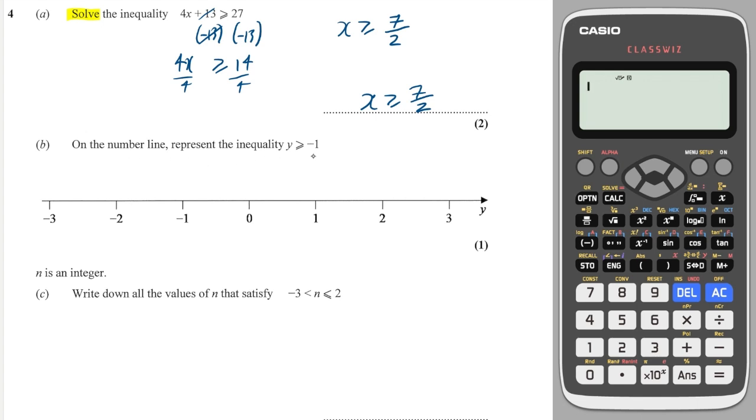We'll represent this on a number line. So the number which we have here is minus 1, so we draw a circle at minus 1. Because it's greater than or equal to, it means I have to fill this circle in. And because it's greater than, it means I'll go to the right of that circle.